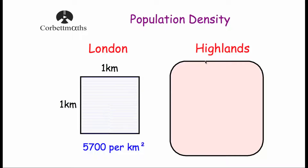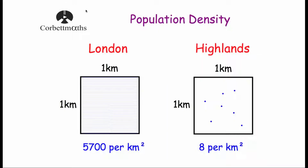Whereas if you do that in the Highlands of Scotland — divide the Highlands into one kilometre squares and divide the people equally into each one of those squares — you would find there are eight people in each one of those kilometre squares. So London has a population density of 5,700 per kilometre squared, whereas the Highlands of Scotland has a population density of eight per kilometre squared. As you can see, the population density of London is much, much bigger than that of the Highlands of Scotland.